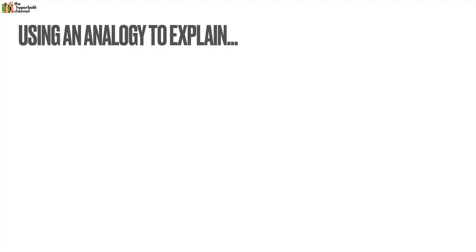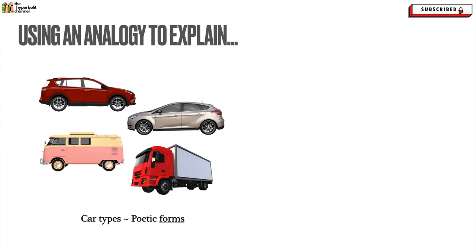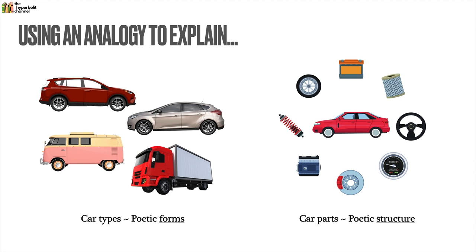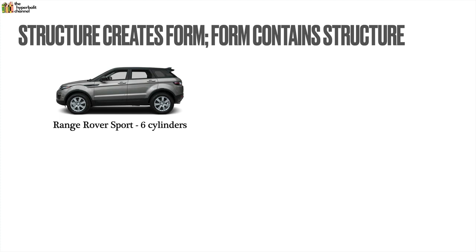Let's now move on to the second topic: understanding form and structure. I'll use an analogy — think of cars. There are many different types: hatchbacks, saloons, caravans, SUVs, trucks. Car types we can think of as poetic forms, whereas the different parts of a car we would think of as poetic structure. Remember: structure creates form, whereas form contains structure. For example, a Range Rover Sport that runs on six cylinders — the Range Rover Sport is the form, and the six cylinders are the structure that is part of it.